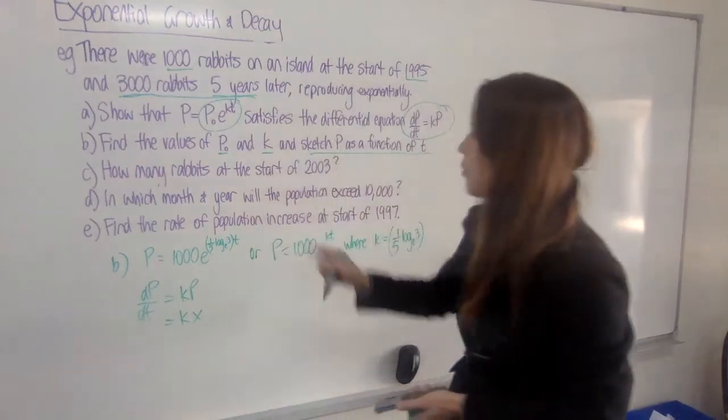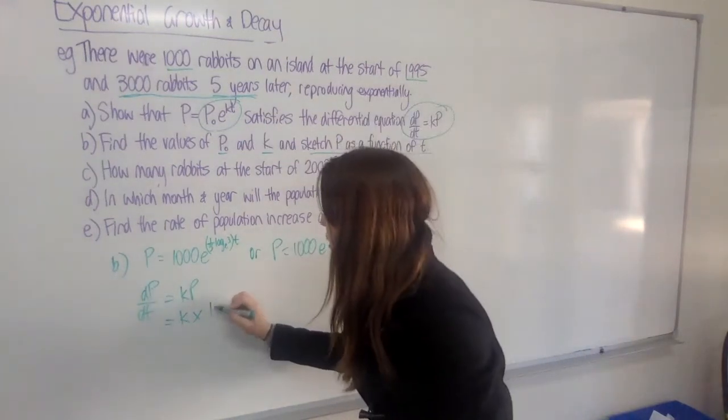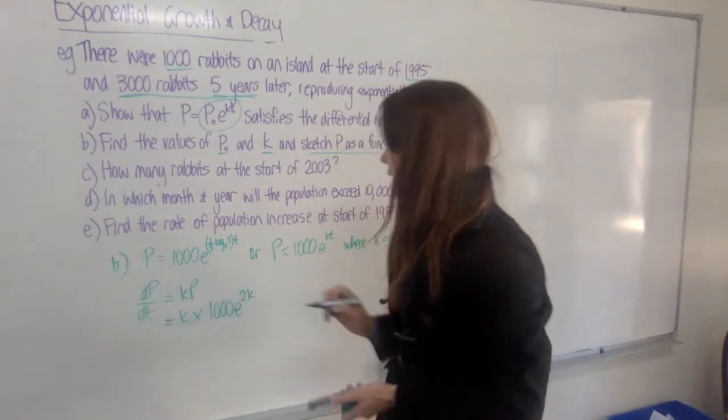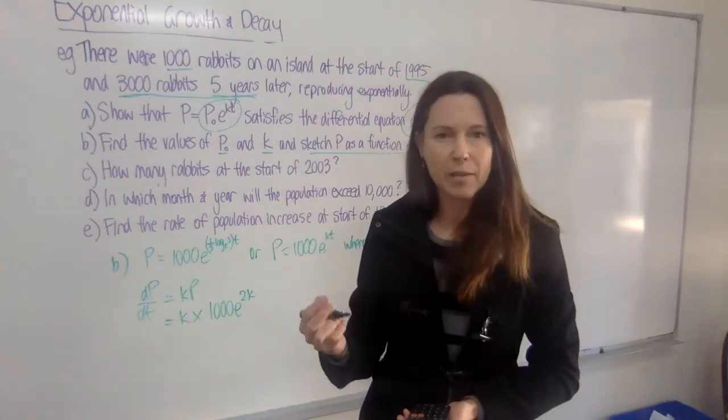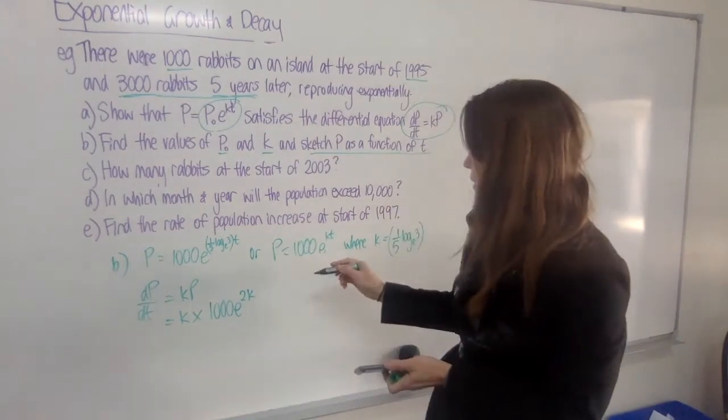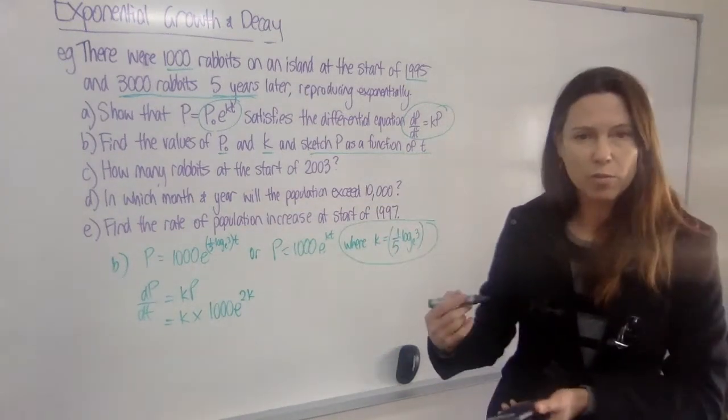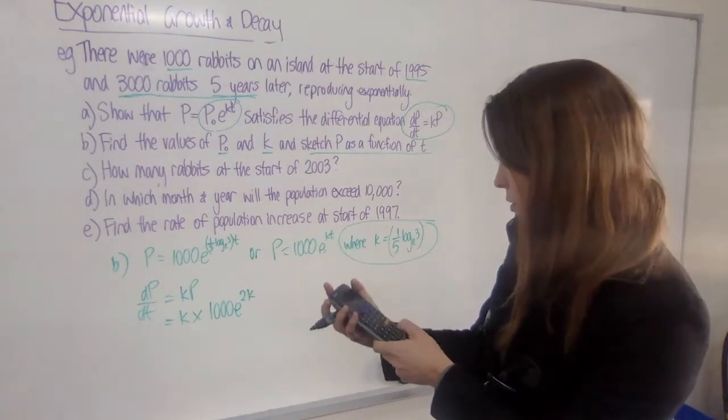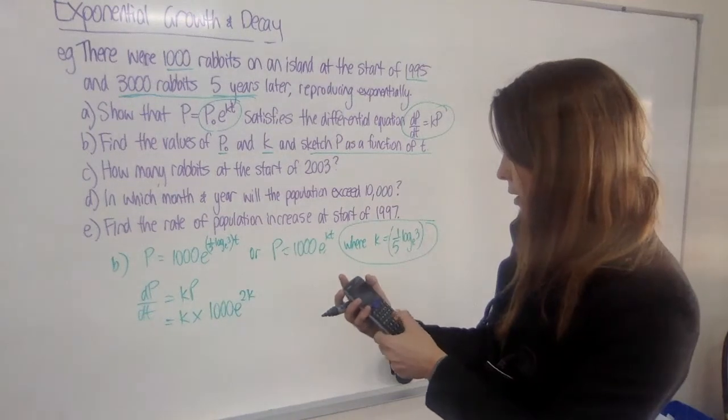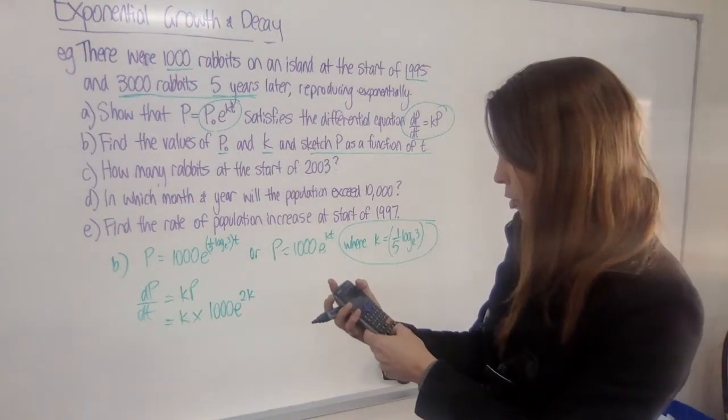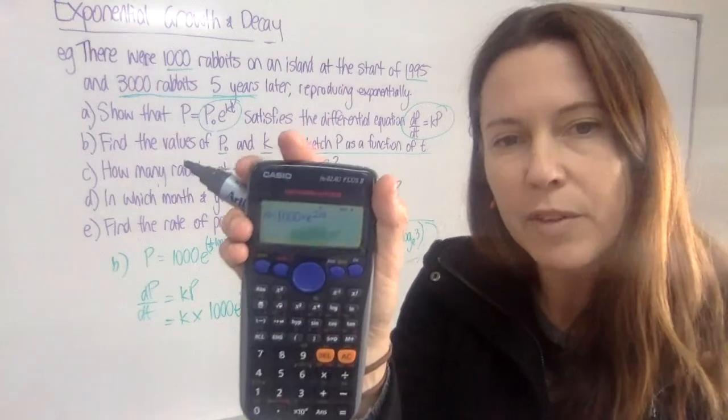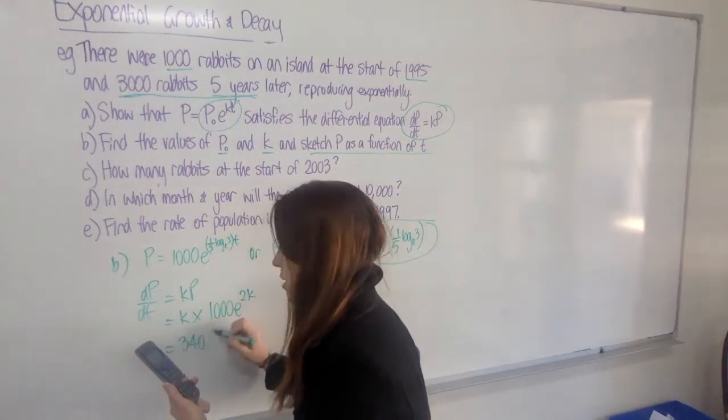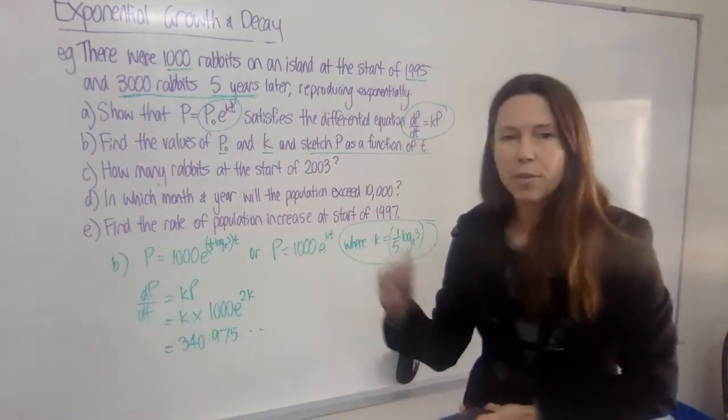So we need the population after two years, which is going to be 1,000, just plugging into our formula here, e to the 2k. Now I've left my formula with the k's in it because it's just quicker and easier to write. And if you've made it very clear at the start of your working that you know what k is, then you can just go ahead and make these calculations using your recall button. So I've got k times 1,000 times e to the power of 2k. And each time I've used k there, I've just used my A. And I get 340.975, et cetera.